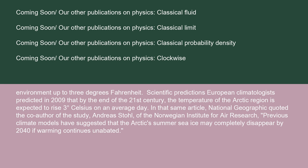European climatologists predicted in 2009 that by the end of the 21st century, the temperature of the Arctic region is expected to rise 3 degrees Celsius on an average day. National Geographic quoted the co-author of the study, Andreas Stoll of the Norwegian Institute for Air Research. Previous climate models have suggested that the Arctic summer sea ice may completely disappear by 2040 if warming continues unabated.